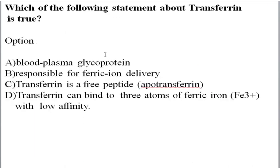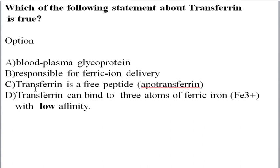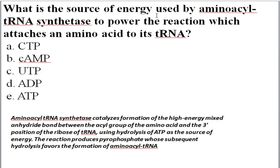The next question asks which statements about transferrin are true. Transferrin is a blood plasma glycoprotein — correct. Transferrin is responsible for ferric iron binding — correct. Transferrin is involved in free peptide aporeceptor transferrin — correct. However, the last option states transferrin can bind three atoms; this is wrong because transferrin can only bind two atoms of ferric iron with high affinity, not low affinity. So options A, B, and C are correct.